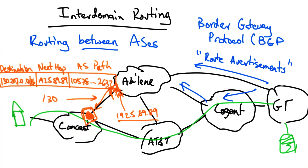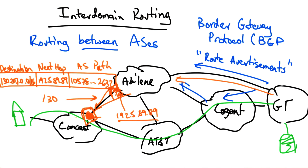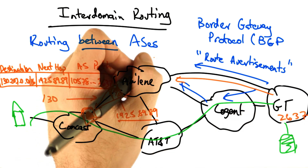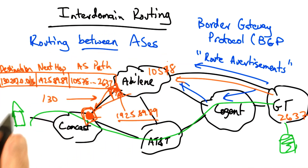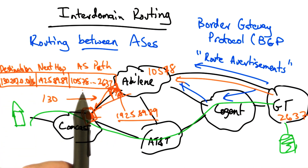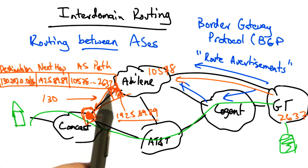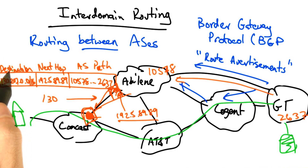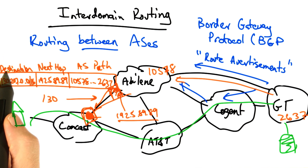Strictly speaking, the AS path is the sequence of ASs that the route traversed to reach the recipient AS. For example, Georgia Tech's AS number is 2637 and Abilene's is 10578. So the AS path that Comcast would hear if it received a route advertisement from Abilene for Georgia Tech would be 10578 followed by 2637. In the remainder of the lesson, we'll look at other BGP route attributes, but these are essentially the three most important because they describe how to stitch together an inter-domain path to a global destination.